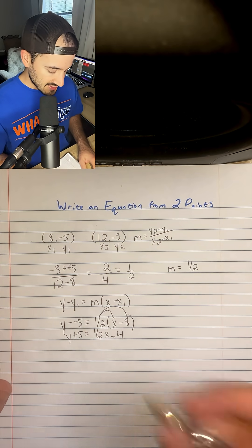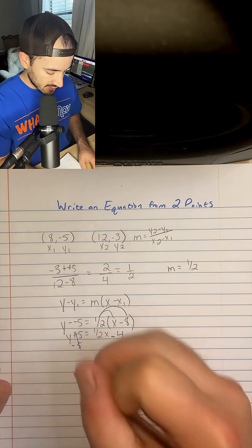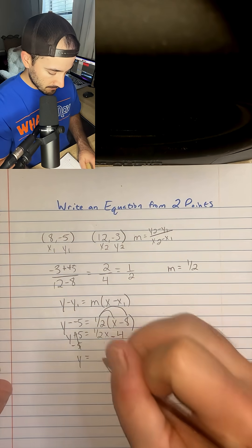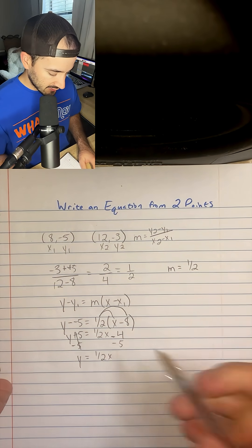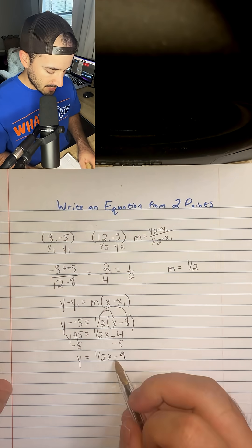And that's going to be to subtract 5 from both sides and get y is equal to 1 half x, and then negative 4 minus 5 is negative 9. So we're going to write minus 9.